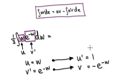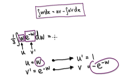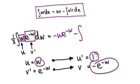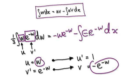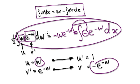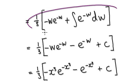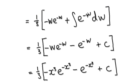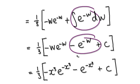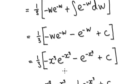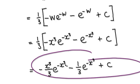It's saying get u times v — so that would be minus w e to the minus w. And then minus the integral — it's saying get u prime times v, so that would be this, and then you've got your dx here. Merge each two together, so this whole thing will then become this. Now integrate this — it will be this. We've done this many times, so overall your answer would be this.